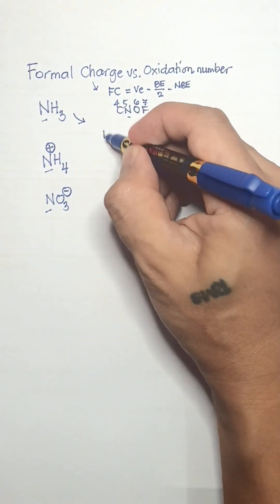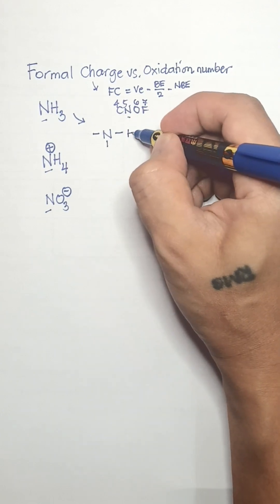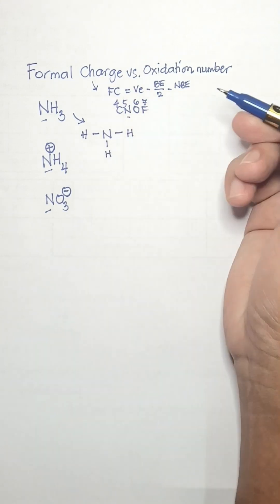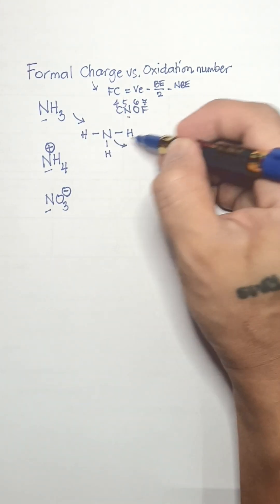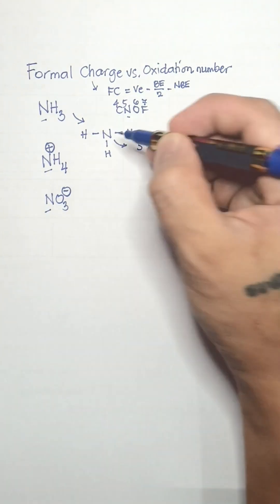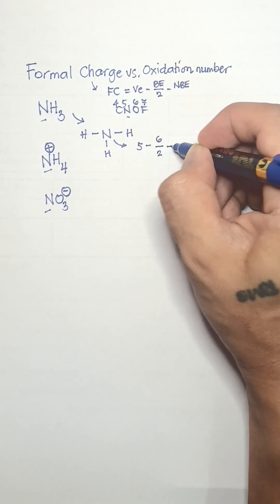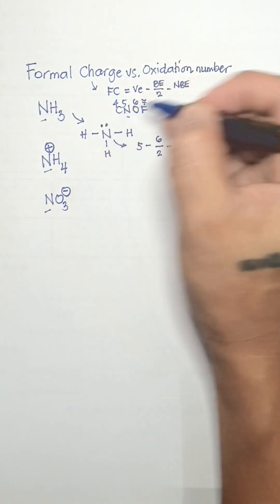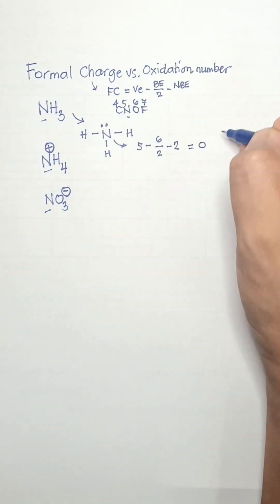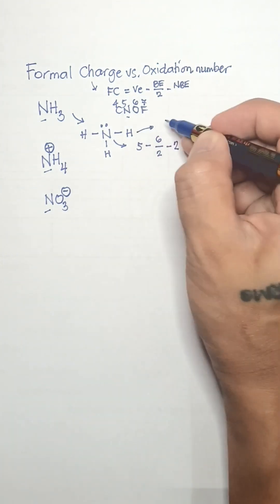Nitrogen in ammonia can bond up to 3, with a lone pair of electrons on the central atom. So for nitrogen, we have valence electrons 5, minus the number of bonding electrons which is 6, divided by 2, minus the number of non-bonding electrons which is 2. This will give us a formal charge of 0.